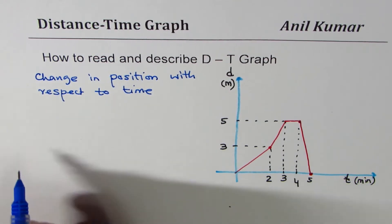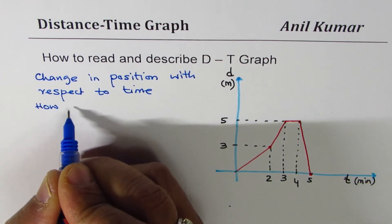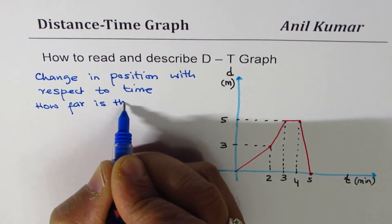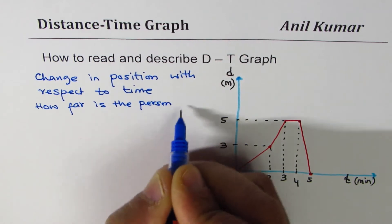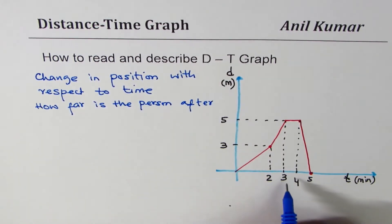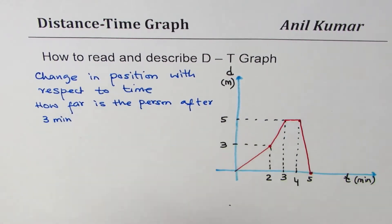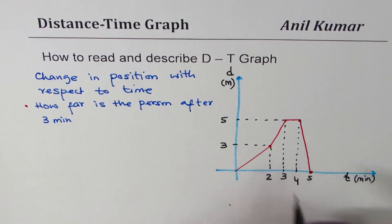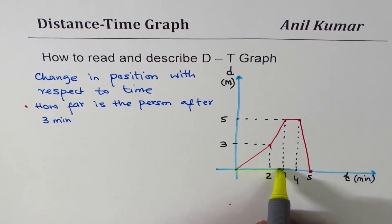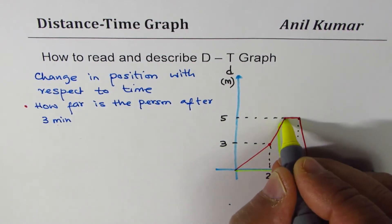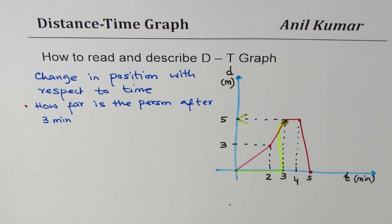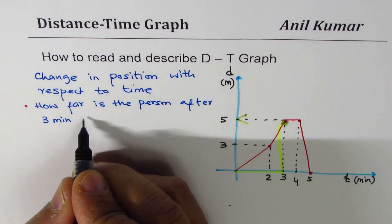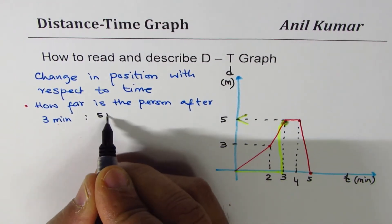First question: how far is the person after three minutes? To read this, go along the time axis to three minutes, then go up to see where it crosses the graph line. You can read that it is five meters. After three minutes, the answer is five meters — units are very important.